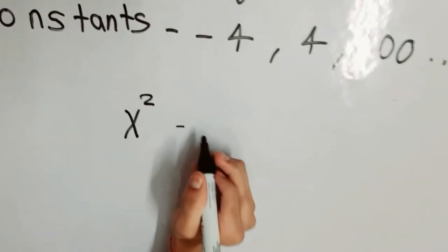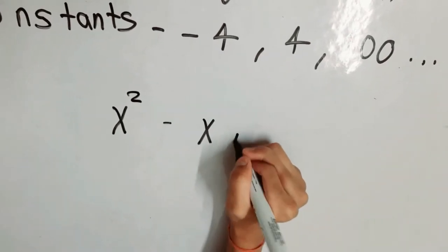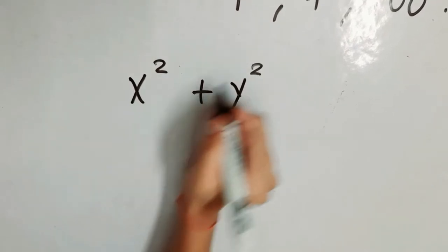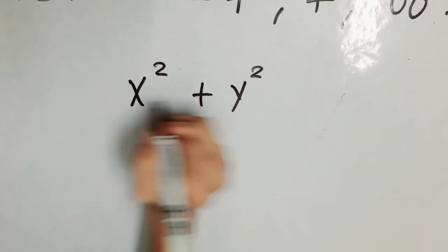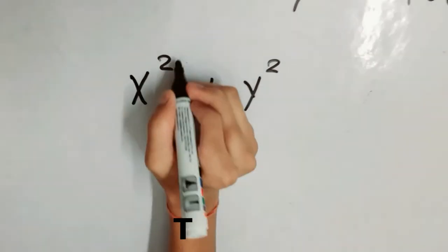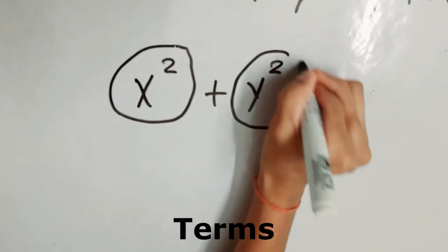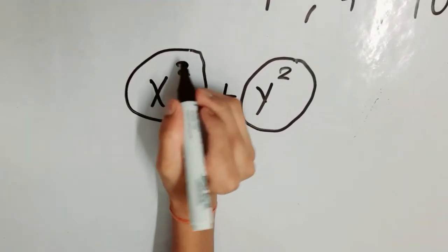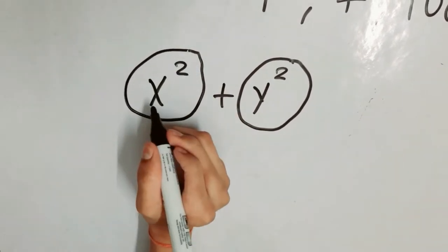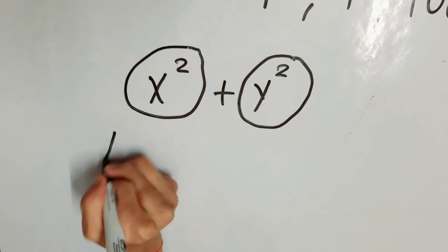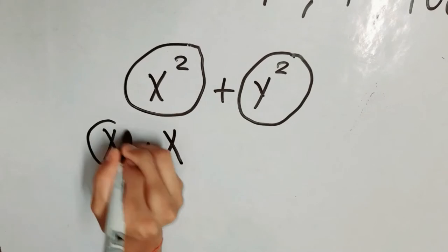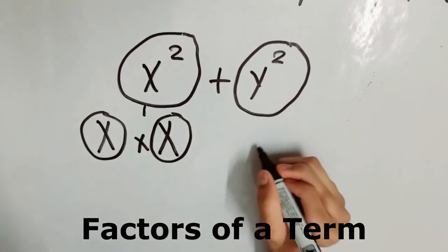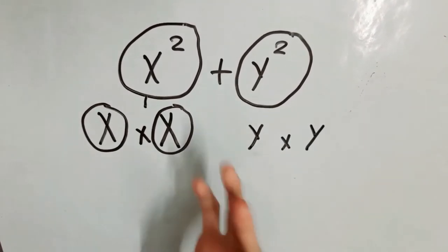Now let's discuss an expression. x² is an expression which is obtained when we multiply x with itself. x² + y² is also called an expression. Here x² and y² are the terms. Now we will learn what is a factor. x² is a term which can be written as x × x, so these two are called factors. Same goes with y² — y × y.